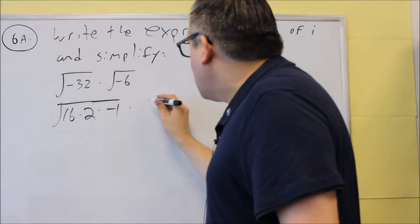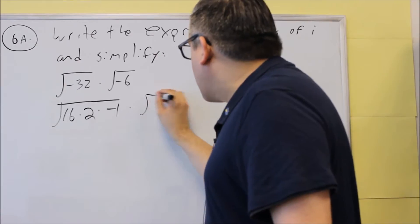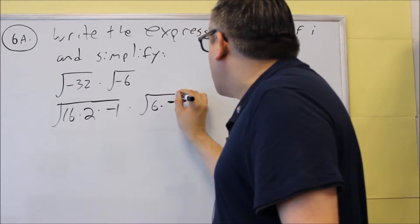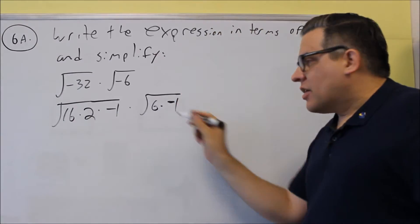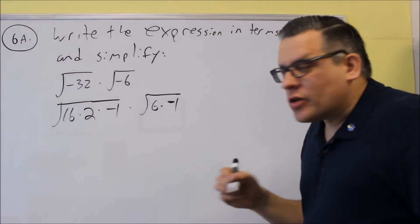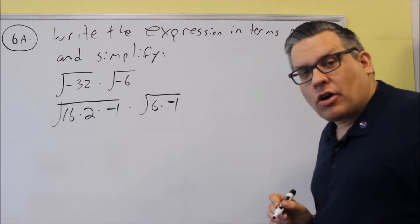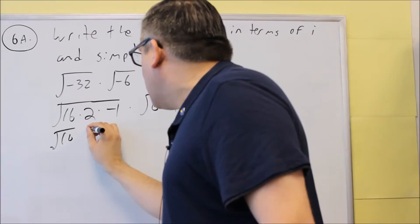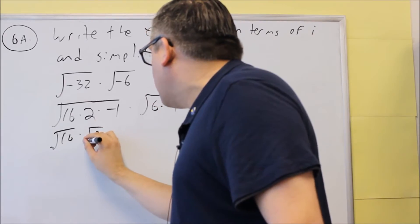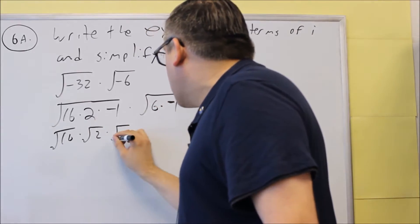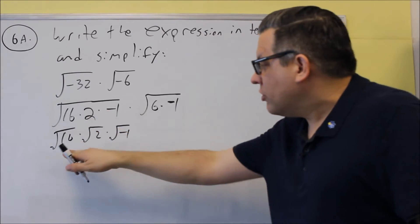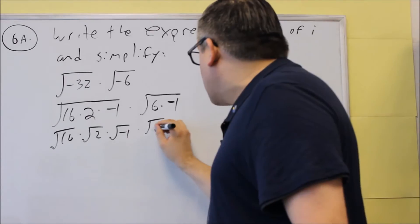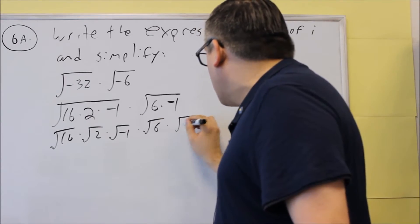For this one, the number inside the square root is 6. Not much I can do with that except write it as 6 times negative 1. The 6 can be broken down into 2 and 3, but there are no perfect squares that divide into that, so that's as far as I can go. Now I'm going to take the square root of each of these separately — I'm able to do that because this is all multiplication. So I'll also do the same thing over here: square root of 6 times square root of negative 1.